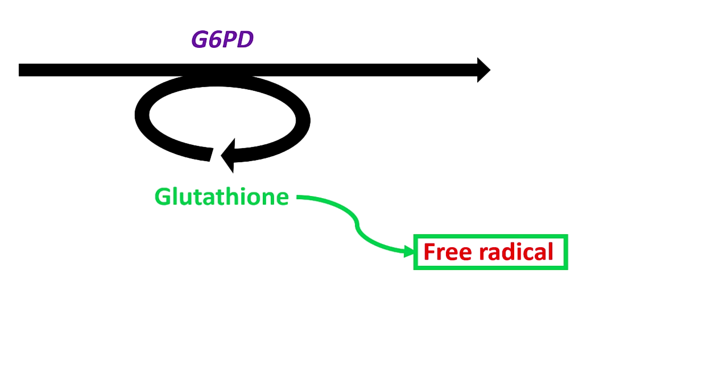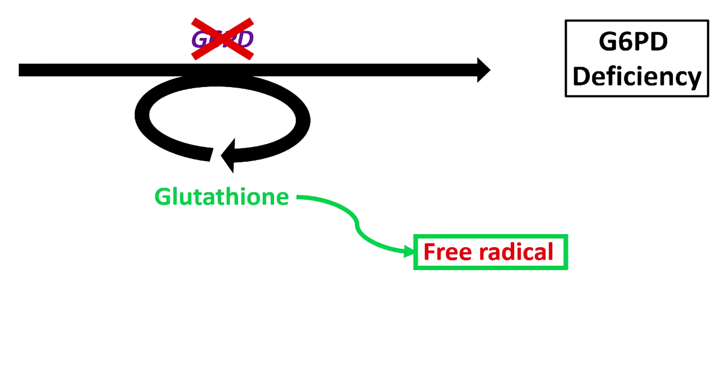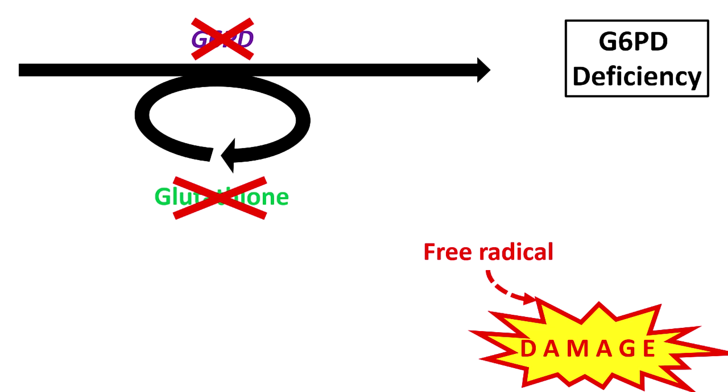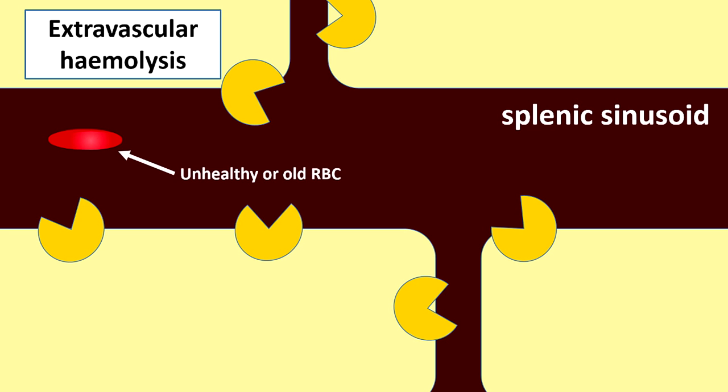In G6PD deficiency there's a mutation which causes lower levels of the enzyme which recycles glutathione and hence less glutathione is going to be around. There's going to be more free radicals knocking about which are going to damage things. Just like in all the other examples, the damaged cells are taken out of the circulation earlier by macrophages in the spleen.